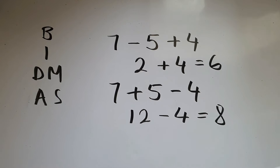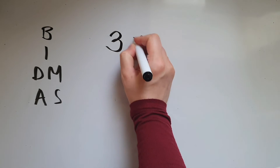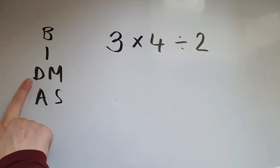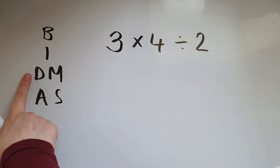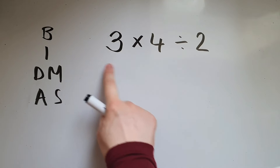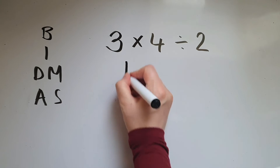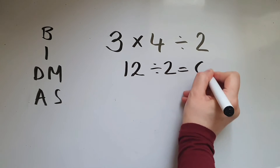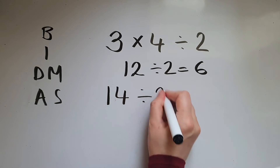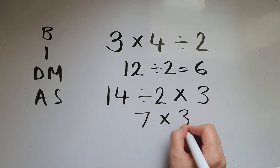Same thing when it comes to multiplication and division. So 3 times 4 divided by 2 — despite BIDMAS having D coming before M, we still do them in the order they're given to us from left to right. So 3 times 4 is 12, divided by 2 gives me 6. And if I have 14 divided by 2 times 3, I'm going to do 14 divided by 2 first, and then times 3.